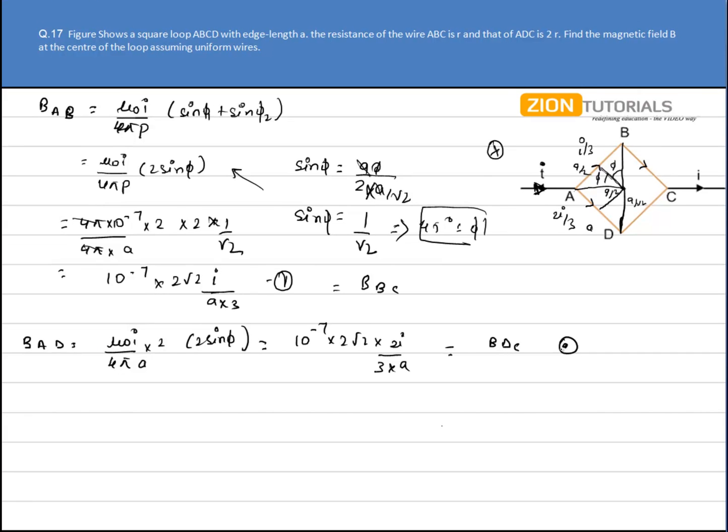B net at the center will be the magnetic field due to AB plus BC plus magnetic field due to AD plus AC. Let's suppose that magnetic field inside the plane is positive and magnetic field outside the plane is positive.